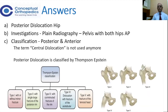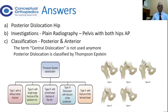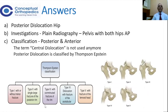The classical classification described, as all of you know, is the Thomson-Ebston classification. Type one is without a fracture or with only a minor fracture. Type two is with a large chunk of the posterior wall. Type three is the comminuted fracture, and the difference will determine how you manage it. Type four is dislocation with fracture of the acetabulum.